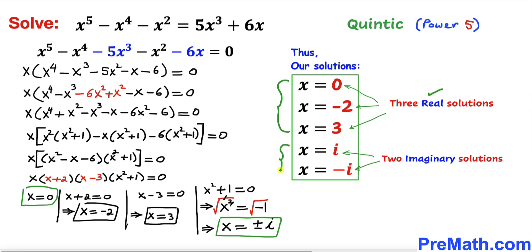Here are our solutions: x = 0, x = -2, and x = 3 are our three real solutions, while x = +i and x = -i are our two imaginary solutions. Thanks for watching and please don't forget to subscribe to my channel for more exciting videos. Bye!